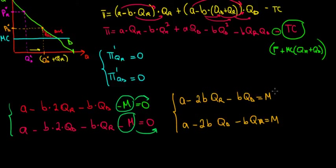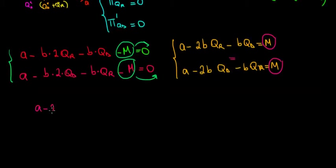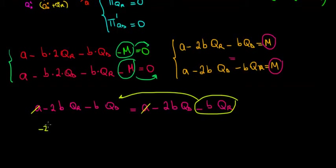We did that to show that m equals m — meaning these two equations are structurally the same. Setting them equal to each other: a minus 2b·qr minus b·qd equals a minus 2b·qd minus b·qr. Since this is an equation, a and a cancel out. Collecting like variables: taking minus 2b·qr plus b·qr on one side, and minus 2b·qd plus b·qd on the other.